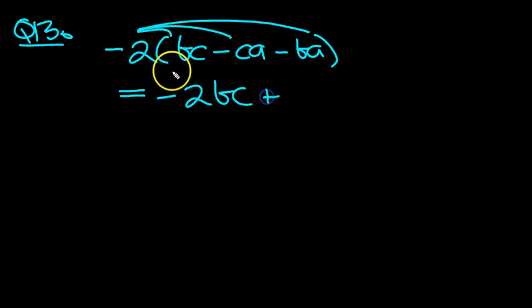Then minus times a minus is a plus. Two lots of CA, which we can write as 2AC, can't we? That's just easier on the eye.